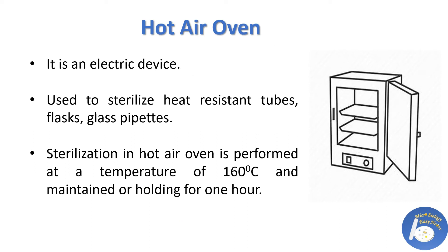Another dry heat sterilization method is the use of a hot air oven. It is an electrical device that utilizes dry heat to sterilize various types of equipment and articles like glassware, surgical equipment, metals, and powders. It provides a continuous flow of heat through blowers and heaters which kill microorganisms present on the surface of the objects.